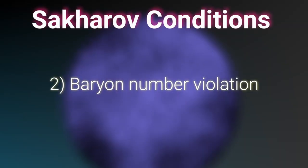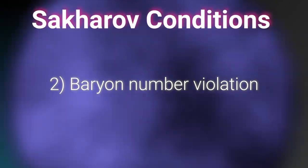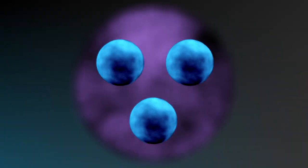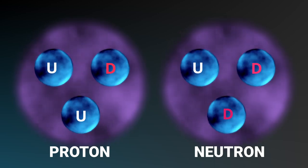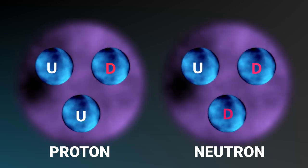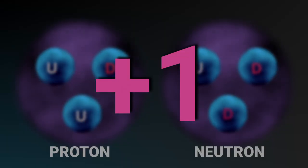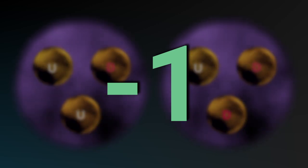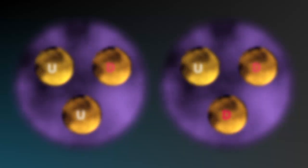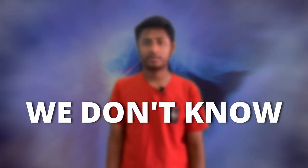The second condition is baryon number violation. Baryons are particles made of three quarks, like protons and neutrons, both of which have baryon number plus one, making anti-protons and anti-neutrons baryon number negative one. We have never observed the violation of baryon number; however, it might be violated.